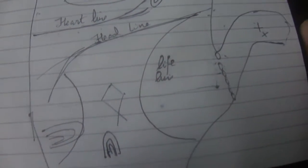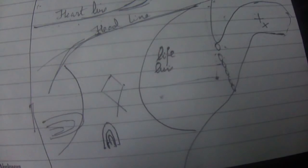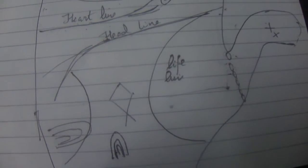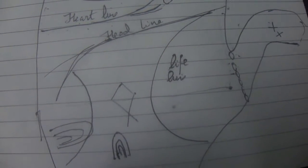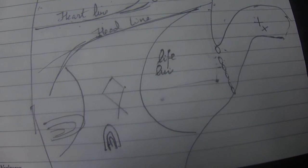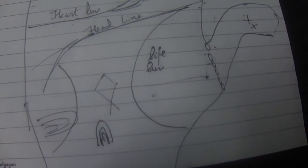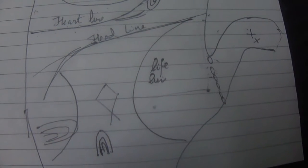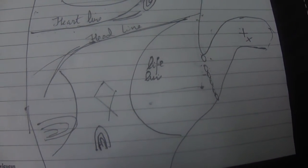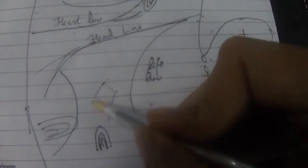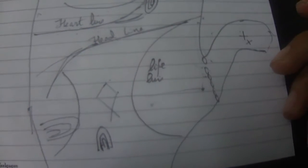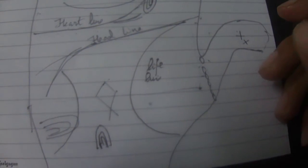The interesting point about the fish symbol is that it generally indicates success, maybe good family life and wealth can be expected. But the important inference and another interesting finding is that whenever this symbol is found, the person should be more patient.